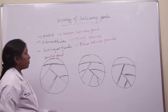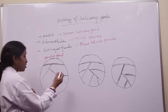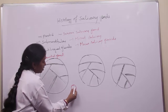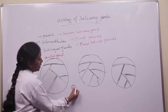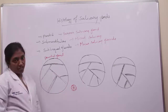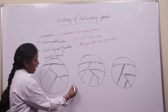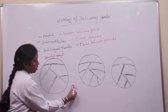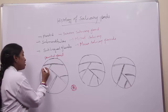In the parotid gland you will be able to see the serous acini, because it is a serous salivary gland it consists of more number of serous acini. The structure of serous acini: they are triangular-shaped cells, the nucleus is round and situated at the base, and the apex of the cell consists of more number of zymogen granules.